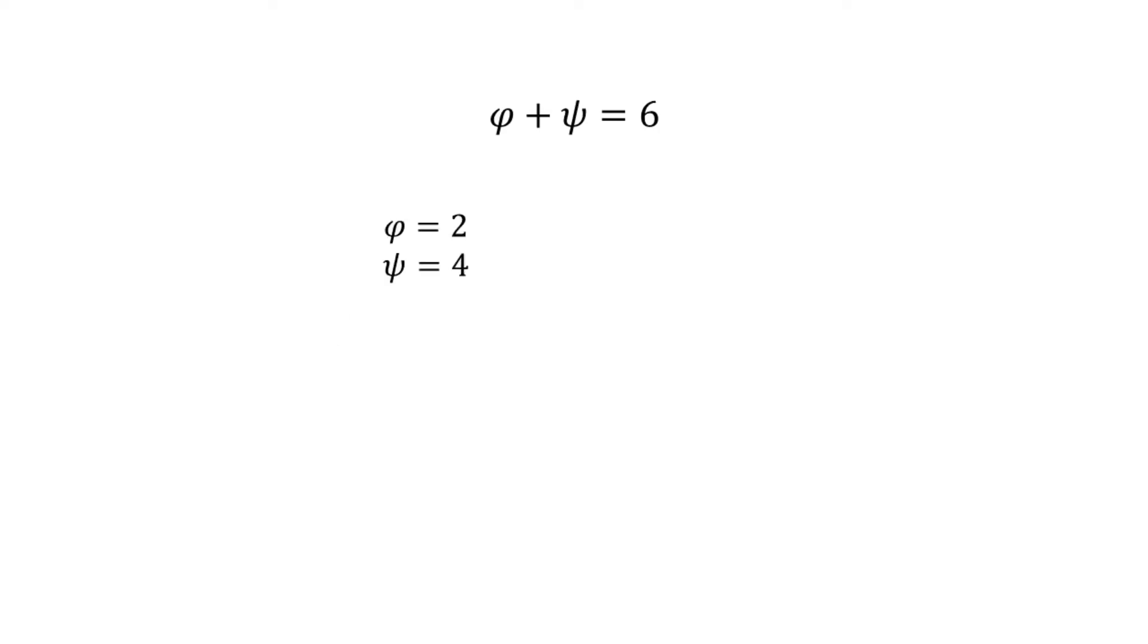We couldn't tell if phi was 2 and psi 4, or phi 4 and psi 2, or 1 and 5, or 5 and 1, or anything else. Each angle can't be known, only their sum.